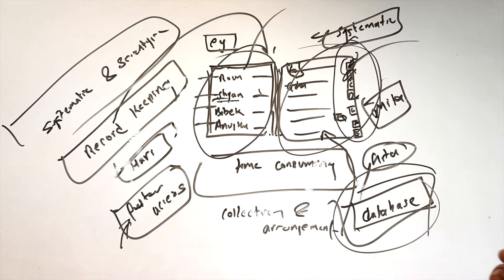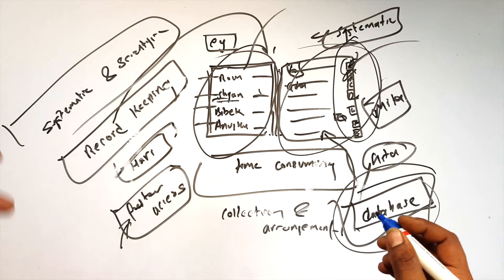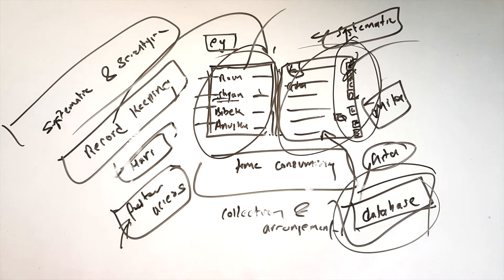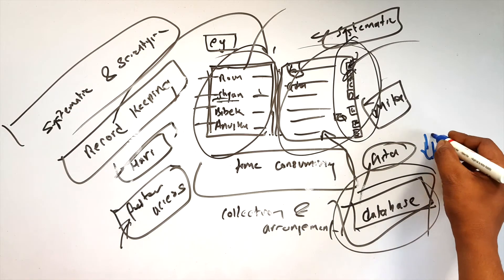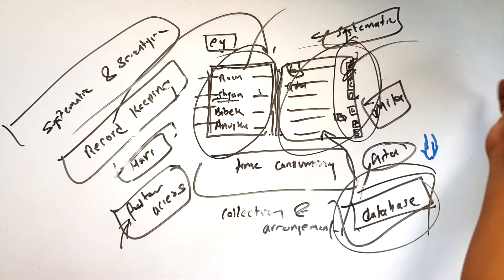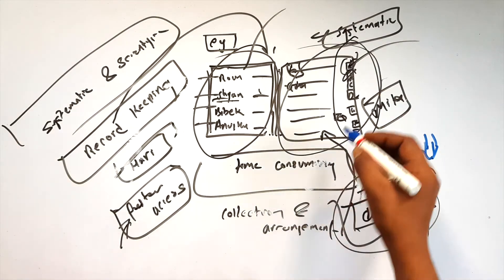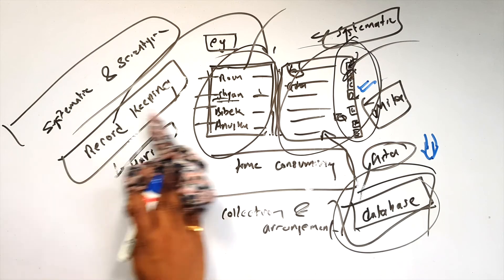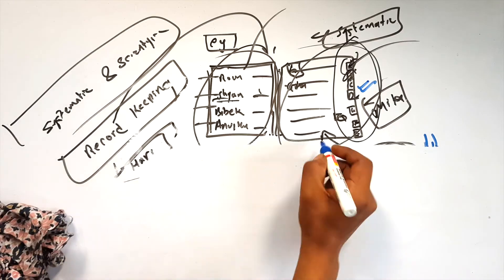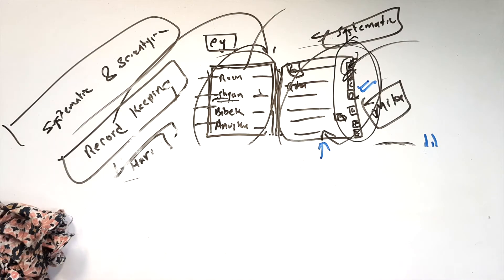Database is a systematic and scientific collection and arrangement of data, so that we can retrieve data whenever required in a faster way. So database is essentially a systematic, scientific record-keeping process. The database is a systematic collection.